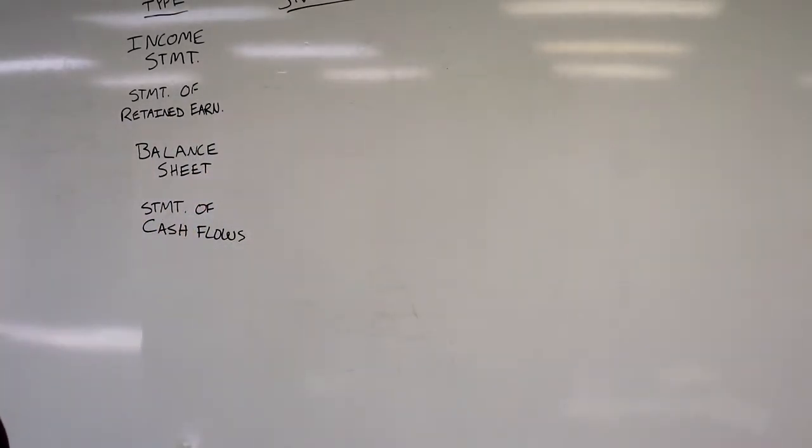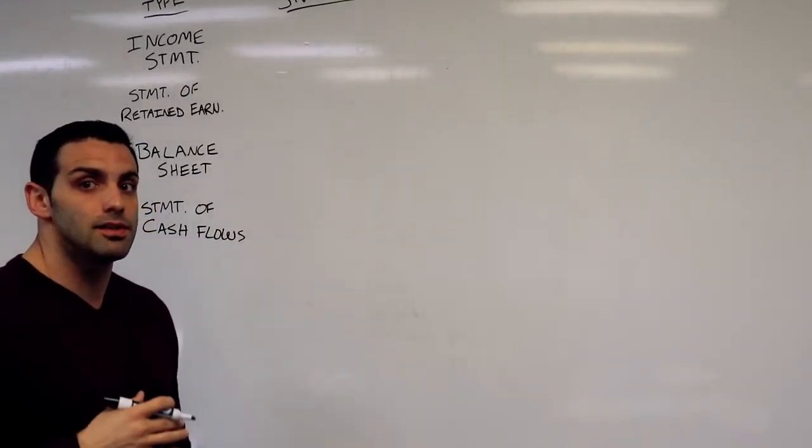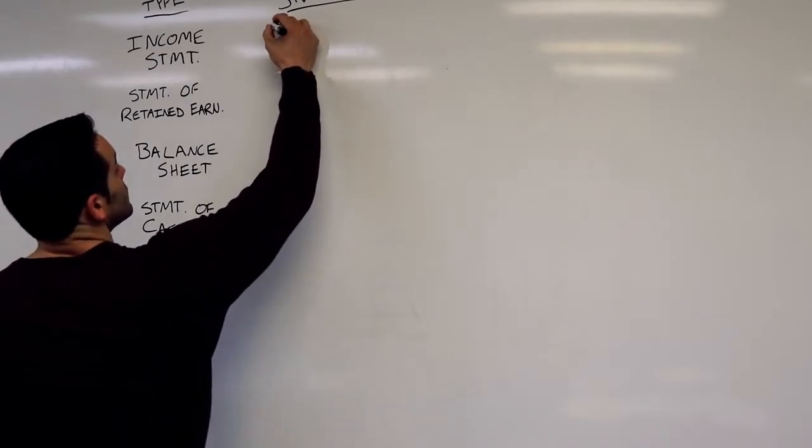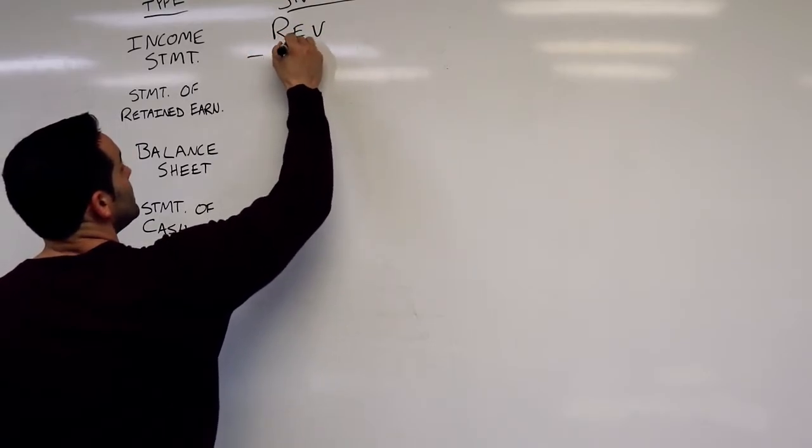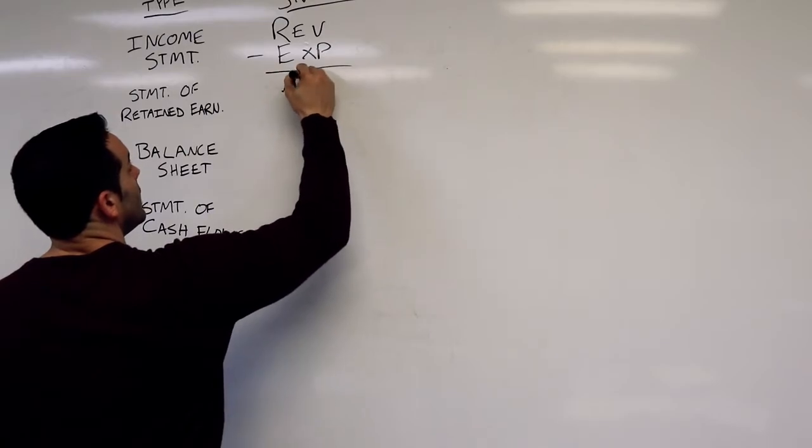The income statement, also known as a profit and loss statement or P&L, has several different names. That one looks like revenues minus expenses equals net income.